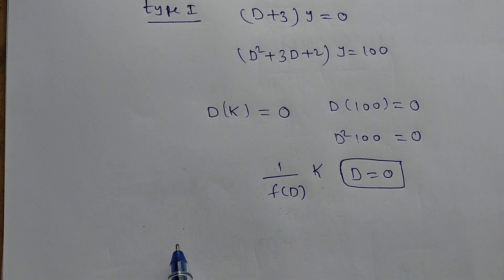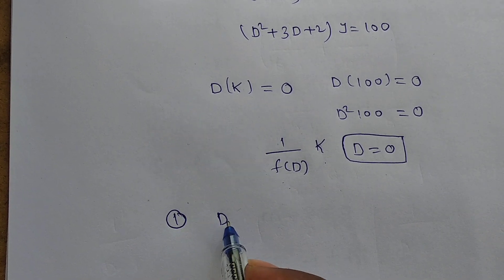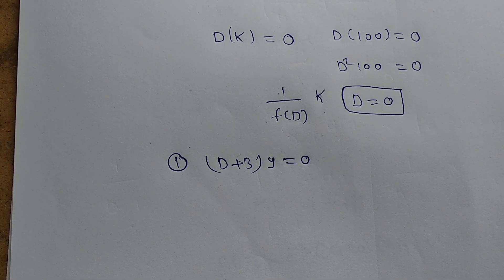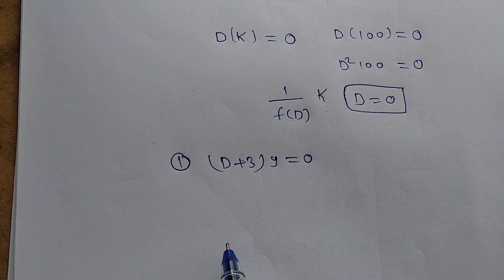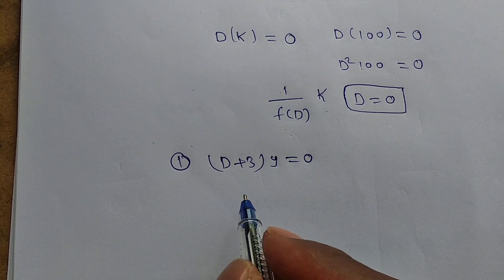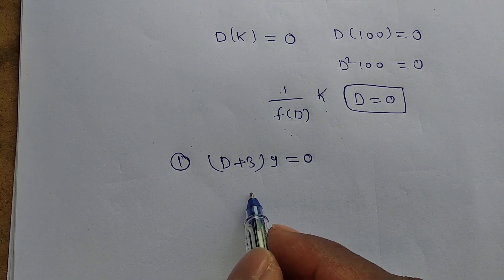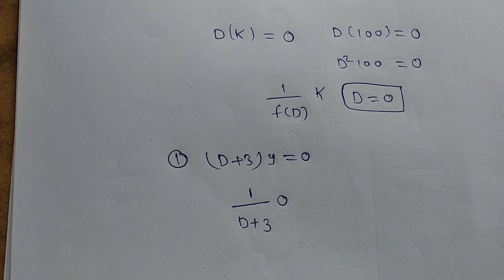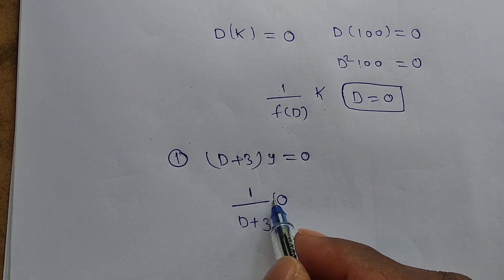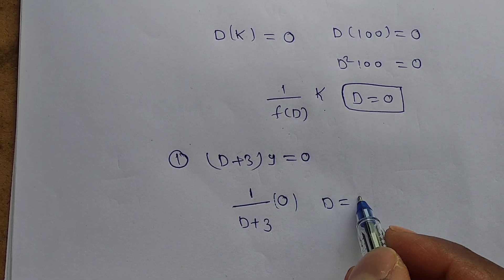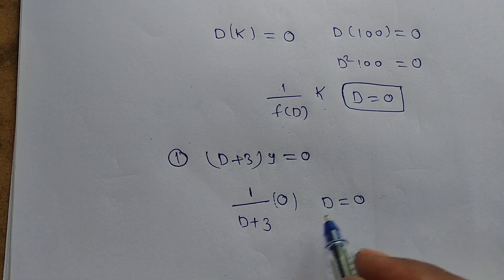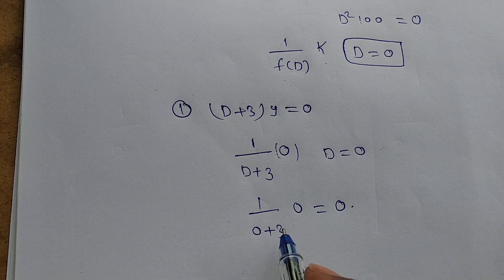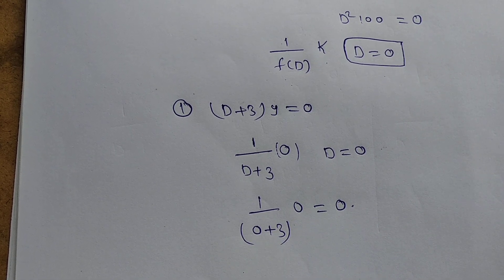Now we solve the first problem: (D+3)·y = 0. The particular integral is 1/(D+3) · q(x), where q(x) = 0. Putting D = 0: 1/(0+3) · 0 = 1/3 · 0 = 0. So the particular integral is 0.